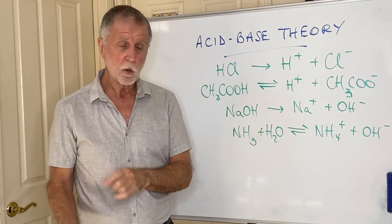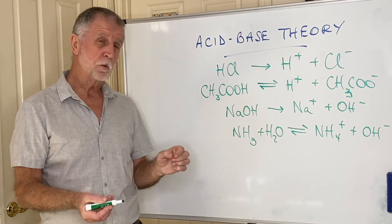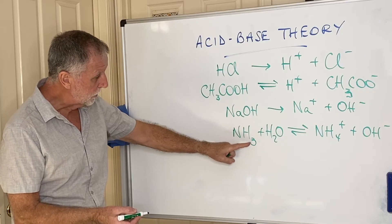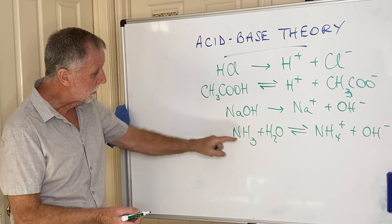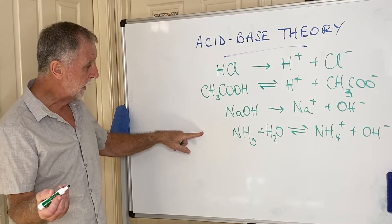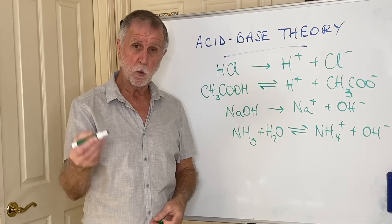Now, again, you are expected to know some weak bases. Ammonia is the classic. And of course, if you know your organic chemistry, you will recognize that if I substitute one of those hydrogens by a carbon chain, what we call an R group, then I'm making an amine. So amines are also weak bases.